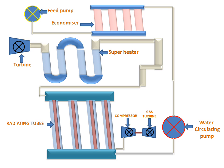Now we will see the animation of the VLOX boiler working. There we will have a steam separator for separating steam, which will come through the radiating tube section.